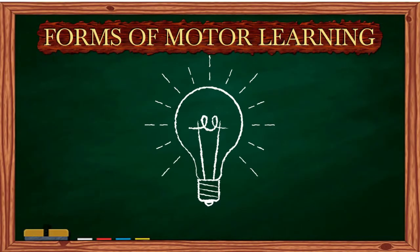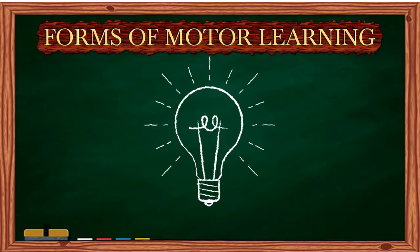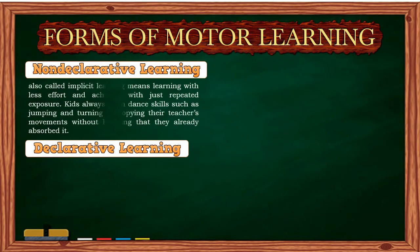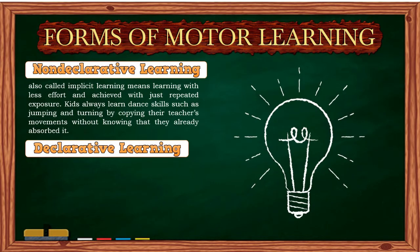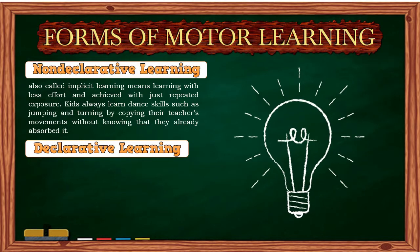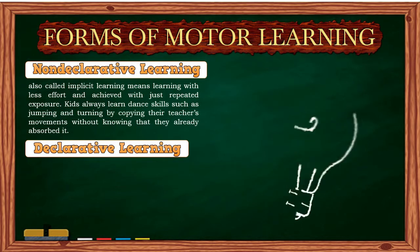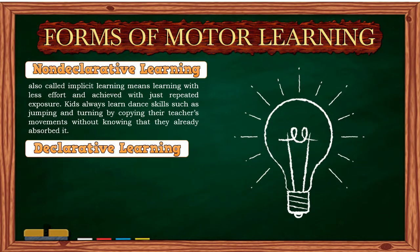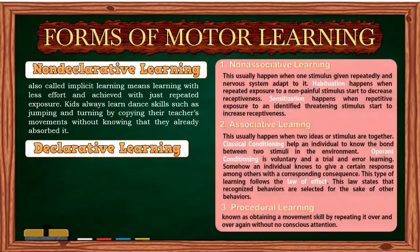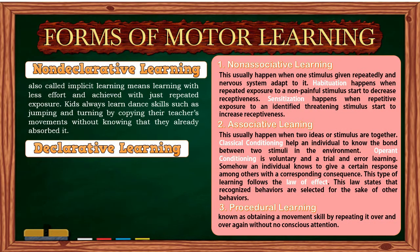Forms of motor learning. Apart from theories and levels, various types of learning influence responses. Overall, types of motor learning can be categorized into declarative and non-declarative learning. Non-declarative learning, also called implicit learning, means learning with less effort, achieved through repeated exposure. Kids learn dance skills such as jumping and turning by copying their teacher's movements without knowing they have already absorbed them. Non-declarative learning can be categorized into associative, non-associative, and procedural learning.